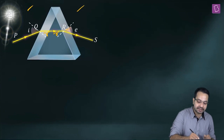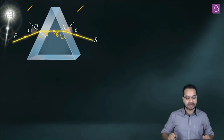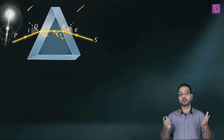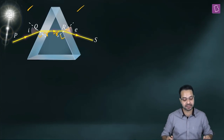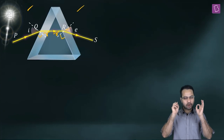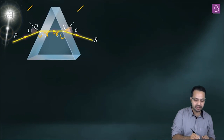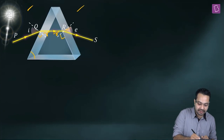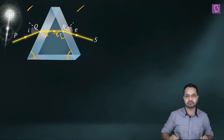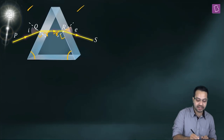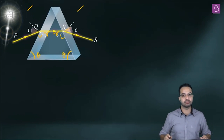This angle is 90 degrees and this angle is also 90 degrees because they are normal to the surface. Now for a minute, let's assume that this angle and this angle are the same — that is, the base angles are equal.